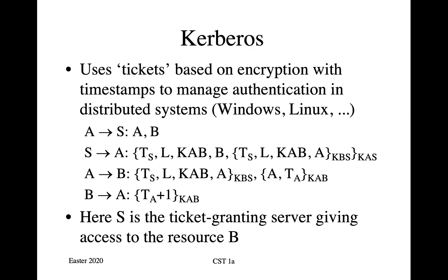Alice sends Sam: 'I'm Alice and I'd like to speak to Bob.' Sam then sends Alice a timestamp Ts produced by Sam, a length of time L for which the key is going to be valid, a key Kab for communication between Alice and Bob, Bob's name B, and then a blob containing information encrypted with the key Kbs — the key that Bob shares with Sam. This blob contains the timestamp, the validity period, the key Kab, and Alice's name A. The whole thing is encrypted with the key Kas that Alice shares with Sam.